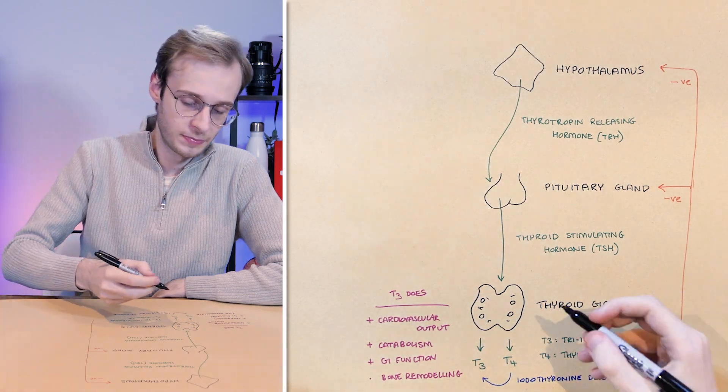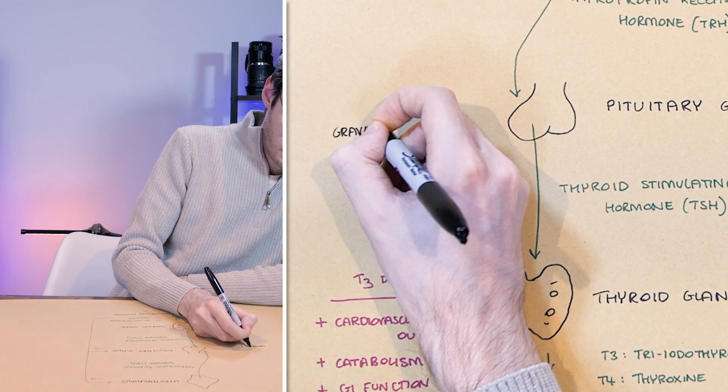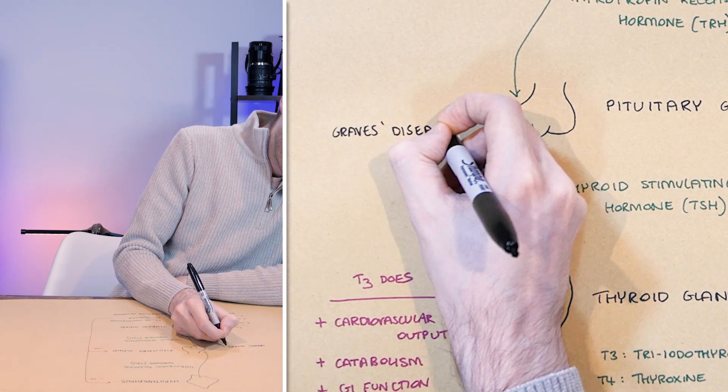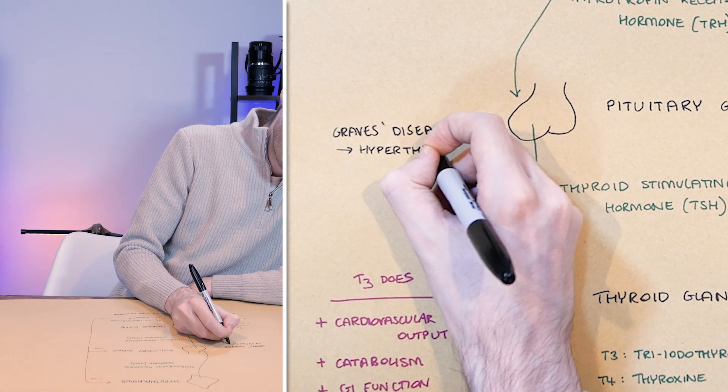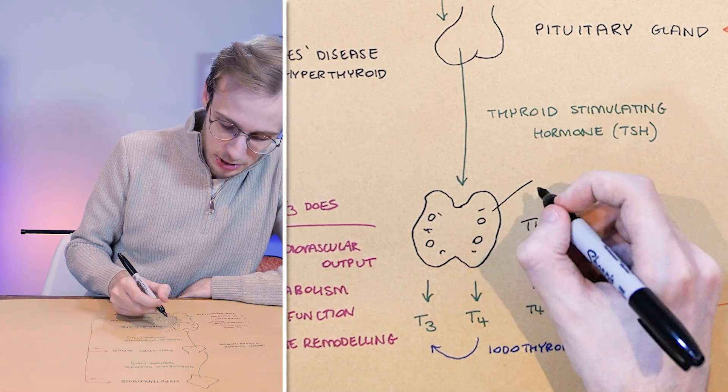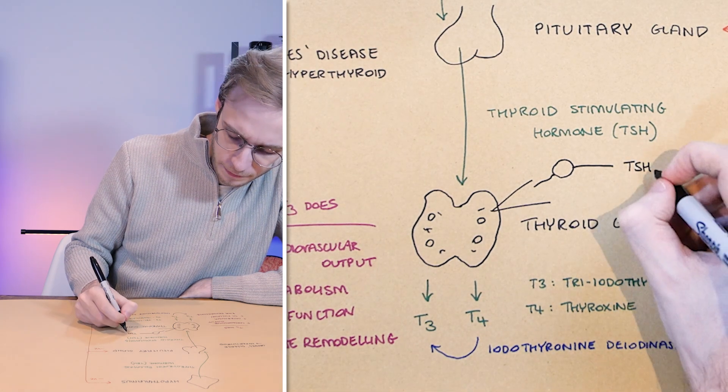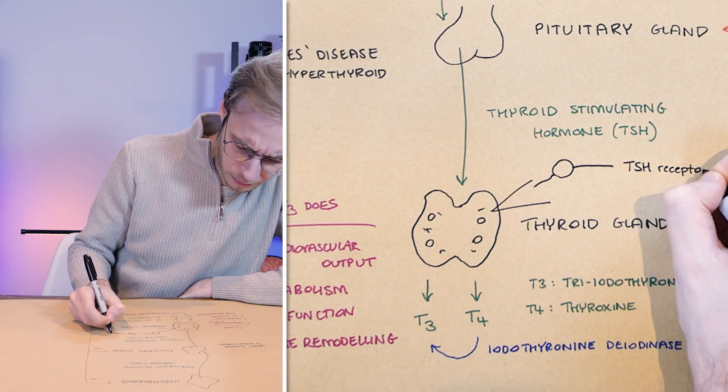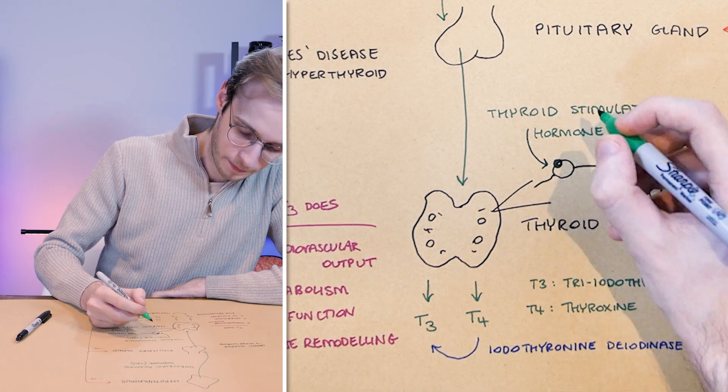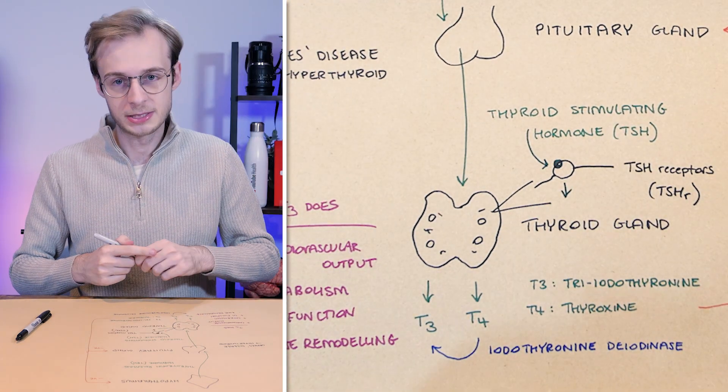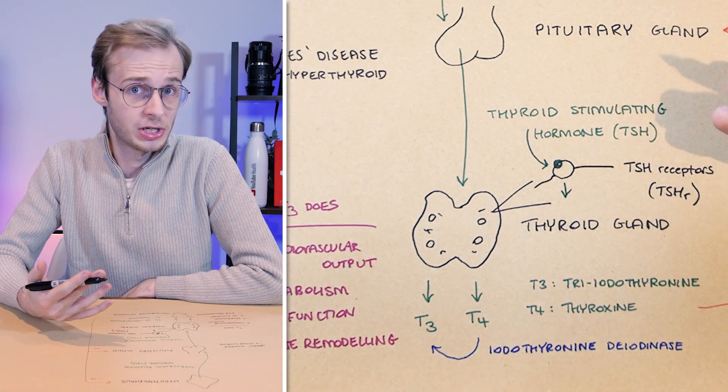Now when it comes to hyperthyroidism, the really key condition that you need to know about is called Graves' disease. As we said, it leads to a hyperthyroid state. And what happens normally, we'll just do a sort of magnified view here, is that in the cell membrane you have TSH receptors. We sometimes denote them as TSHR. And your thyroid hormone comes along and binds to these, and then that sets off the chain of reactions inside the cell, which leads to more T3 and T4 being produced. A hormone always has to have something to bind to, to exert its actions.